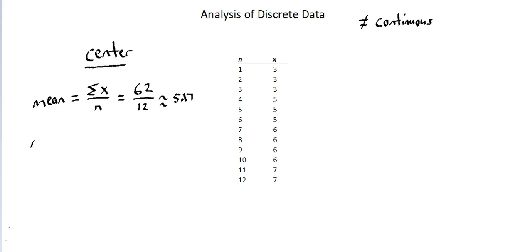Another measurement is median. Median is the middle data point. Notice in our data set we have an even number of data points — six and seven are the two center data points, we don't have just one. If we have an odd number (odd n), then the median is simply the middle value.